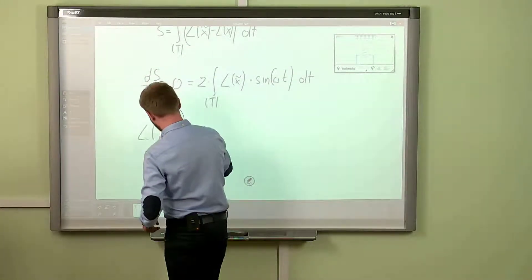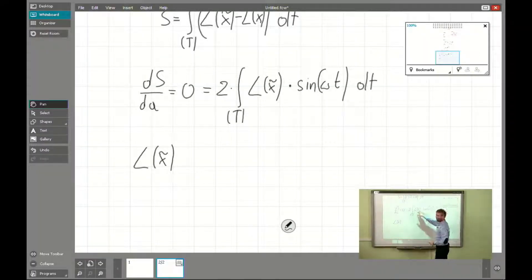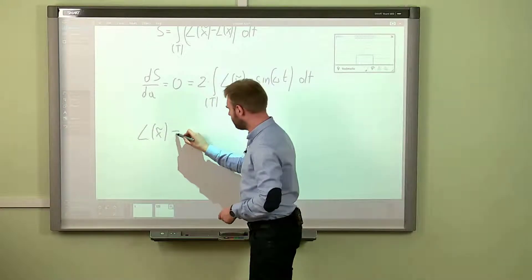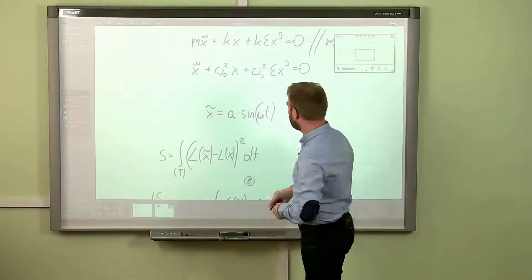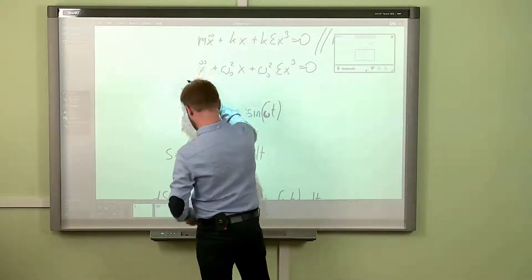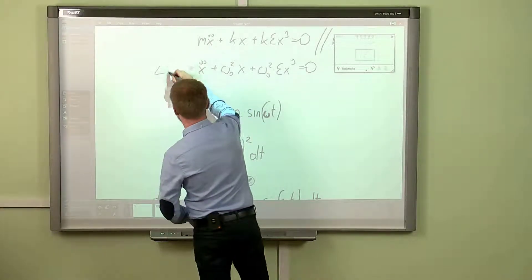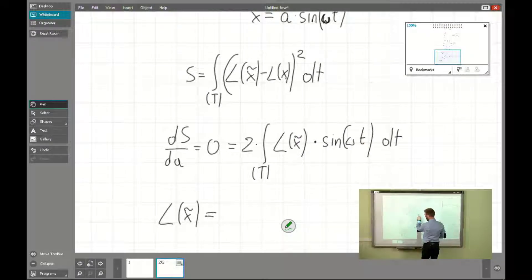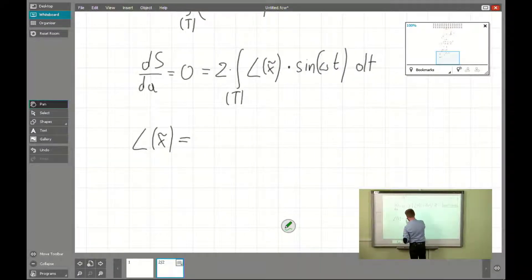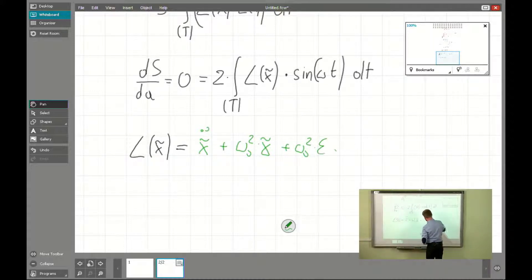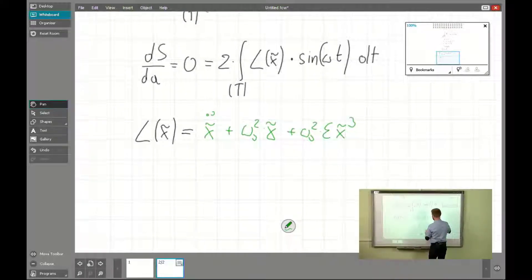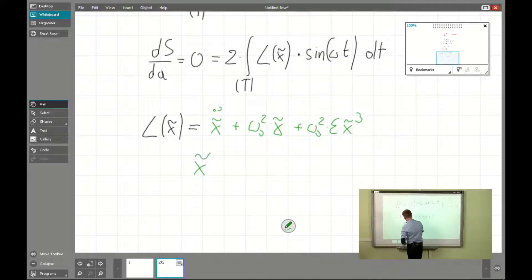For our computations we need to compute the value of the operator acting on the simplified solution — we put our predicted solution into the governing equation. The operator L acting on x-tilde is: x-tilde double-dot plus omega zero squared times x-tilde plus omega zero squared times epsilon times x-tilde cubed.